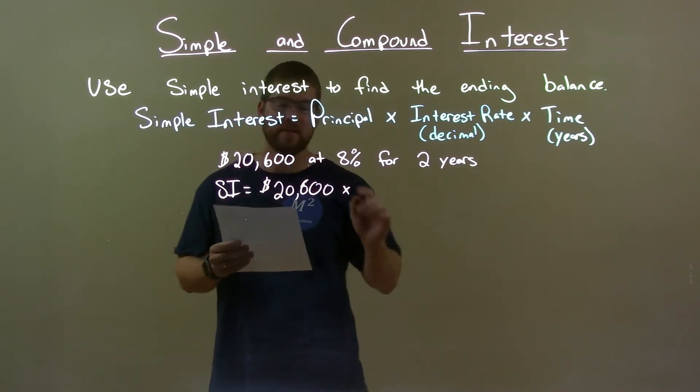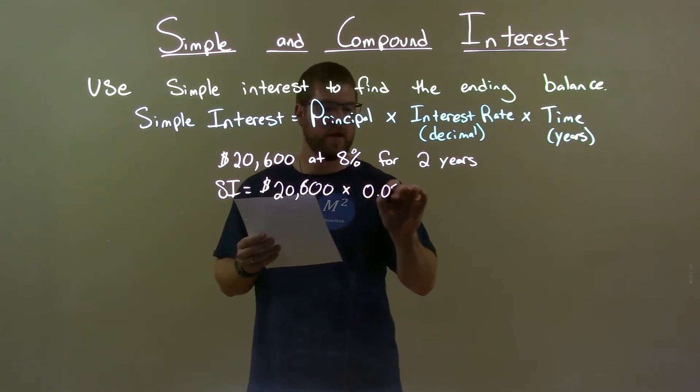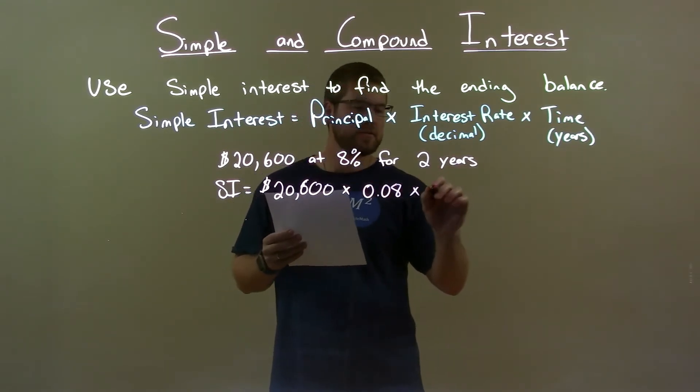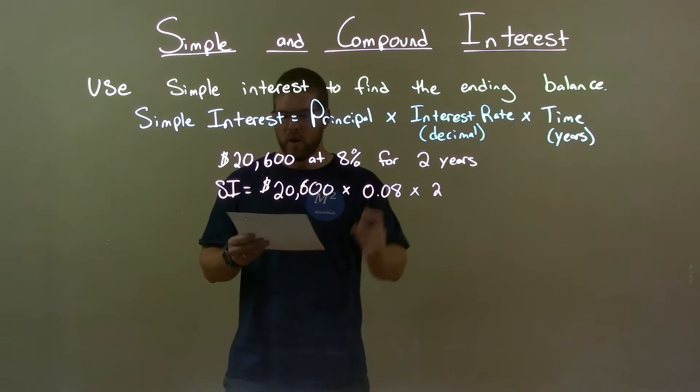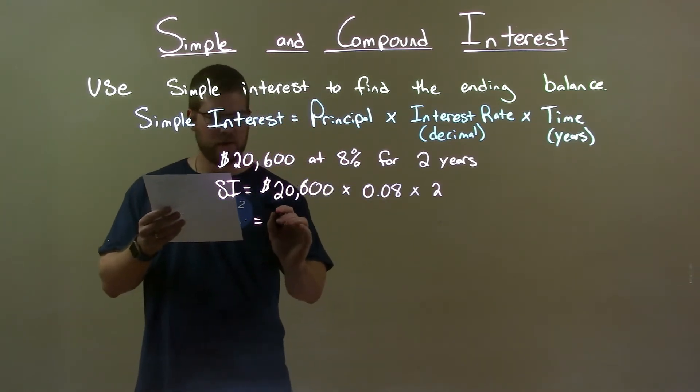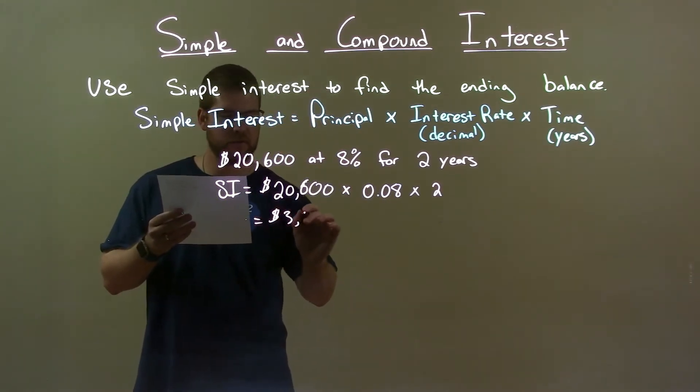Times my interest rate as a decimal, 0.08, for how many years? 2 years. When I multiply that out, I get a value of $3,296.